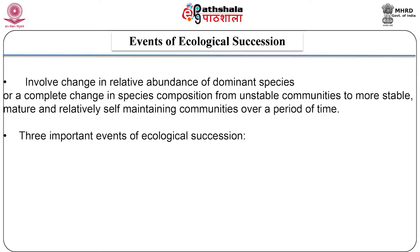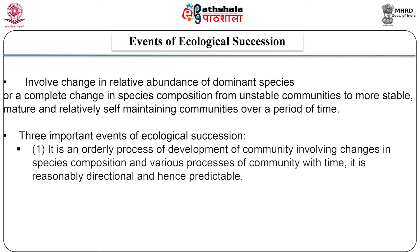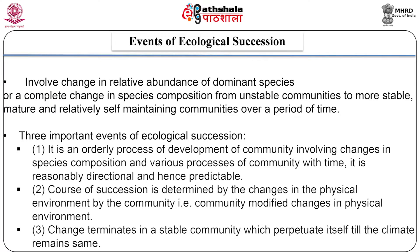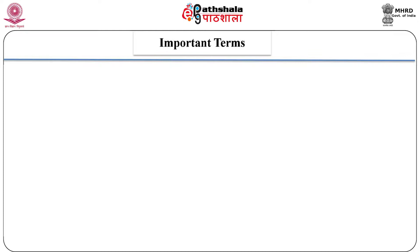Ecological succession may be described on the basis of the following three important events. First, it is an orderly process of the development of a community involving changes in species composition and various processes of the community with time — it is reasonably directional and hence predictable. Second, the course of succession is determined by the changes in the physical environment of the community, that is the community modifies changes in the physical environment. And third, changes terminate in a stable community which perpetuates itself till the climate remains the same.